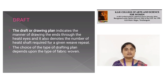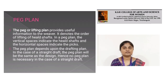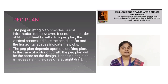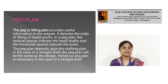The draft or drawing plan indicates the manner of drawing warp ends through the heddle eyes, and also shows the number of heddle shafts required for the weave. The choice of drafting plan depends upon the fabric being woven. In the peg plan or lifting plan, it provides useful information to the weaver and denotes the order of lifting of heddle shafts. In the peg plan, the vertical space indicates the heddle shaft and the horizontal space indicates the pick. The peg plan depends upon the drafting plan. In the case of a straight draft, the peg plan will be the same as the design; hence, no peg plan is necessary.